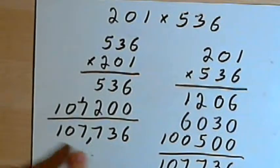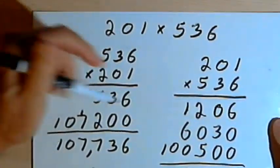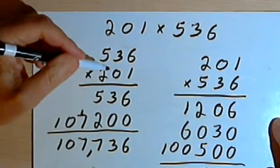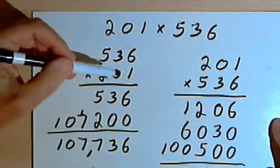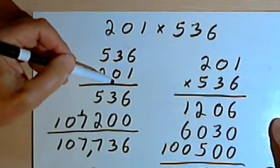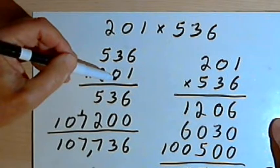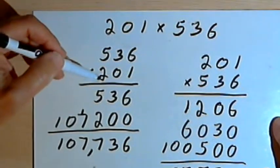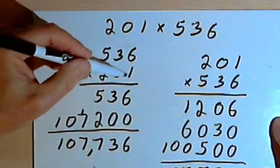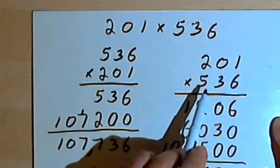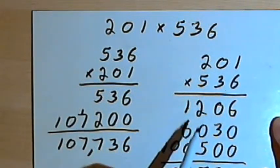Now there are two nice things about being able to decide how you want to set the problem up. First of all, you can decide what numbers you think would be easier to use when you do the multiplication. In this case, I thought it would be a lot easier to multiply by 2 and 0 and 1 than to multiply by 5 and 3 and 6. It's up to you to decide.